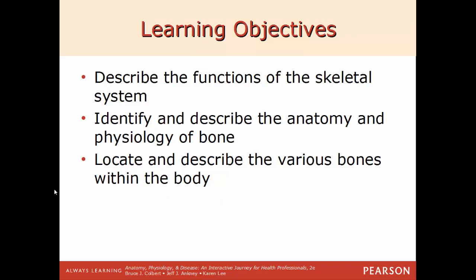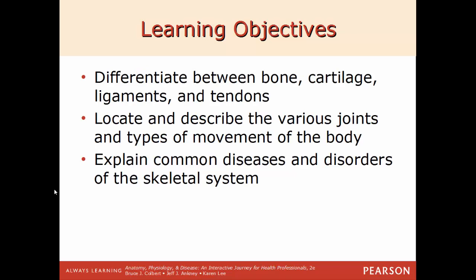The learning objectives for this chapter: be able to describe the functions of the skeletal system; be able to identify and describe the anatomy and physiology of bone; be able to locate and describe the various bones within the body; be able to differentiate between bone and cartilage, ligaments, and tendons; be able to locate and describe the various joints and the different joint types and the types of movement in the body; and be able to explain some common diseases and disorders of the skeletal system.